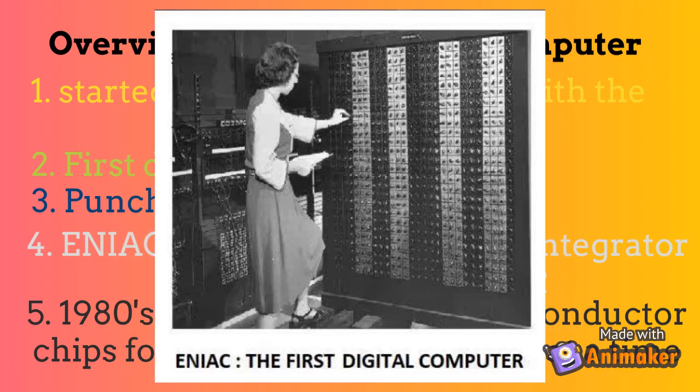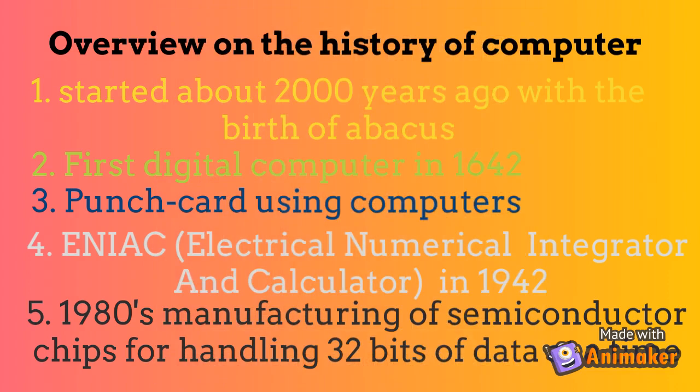Then the next one is ENIAC — that is Electrical Numerical Integrator and Calculator. This is our first digital computer, launched in 1942. With the help of ENIAC, we were able to solve a large number of numerical problems. Then in the 1980s, manufacturing of semiconductor chips for handling 32 bits of data at a time was introduced — it could solve about 32 bits of data at a time.